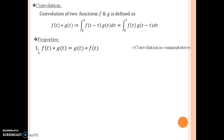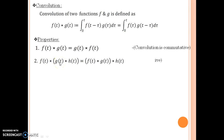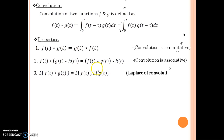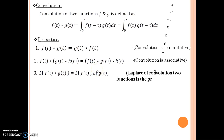Let us now move on to the next property of convolution. If there are multiple functions, convolution has the property that it is associative. The third property is of great interest to us: the Laplace of a convolution is nothing but the product of the individual Laplace transforms of the two functions.